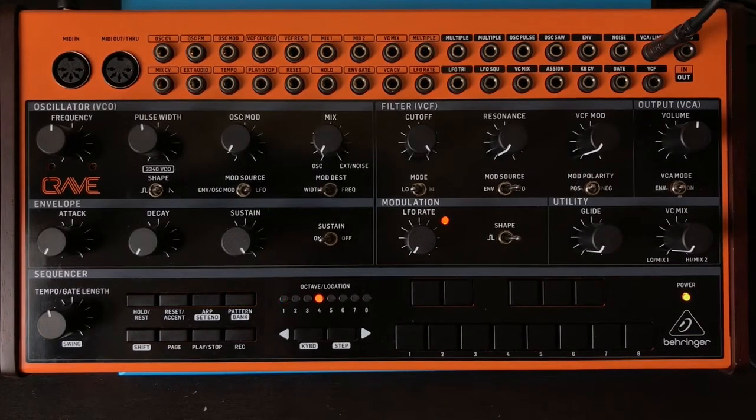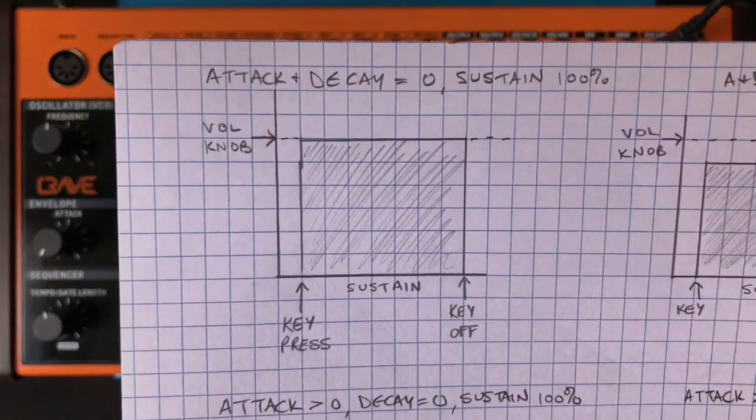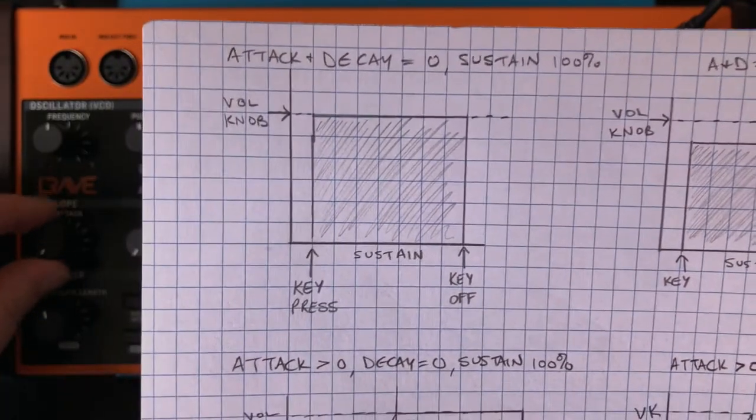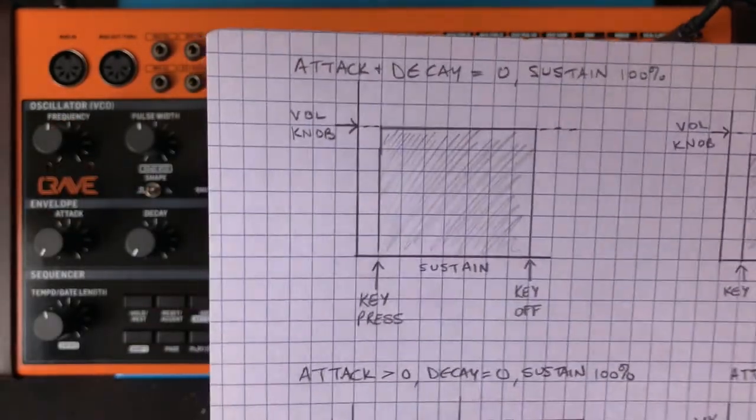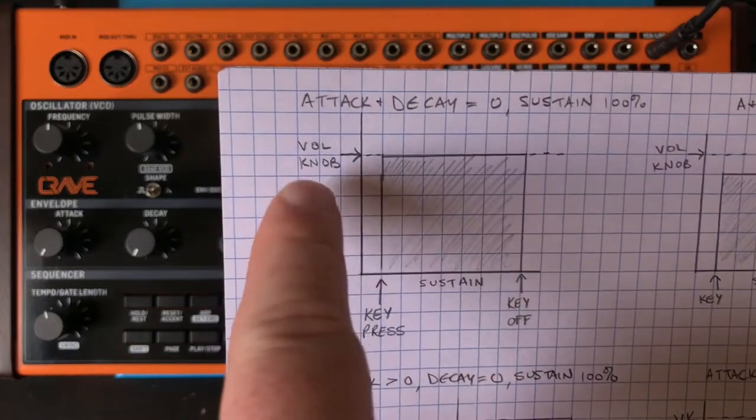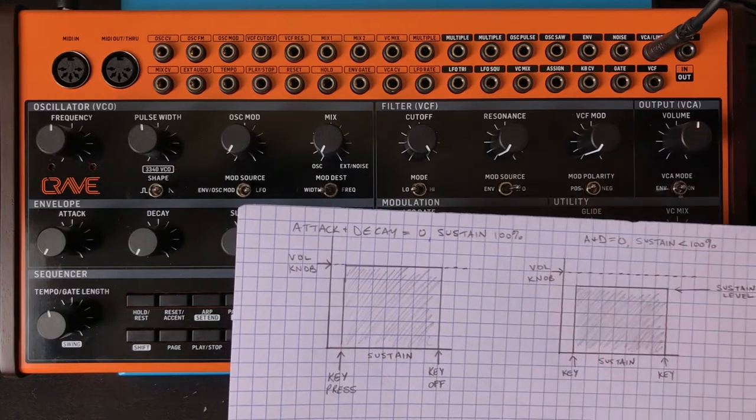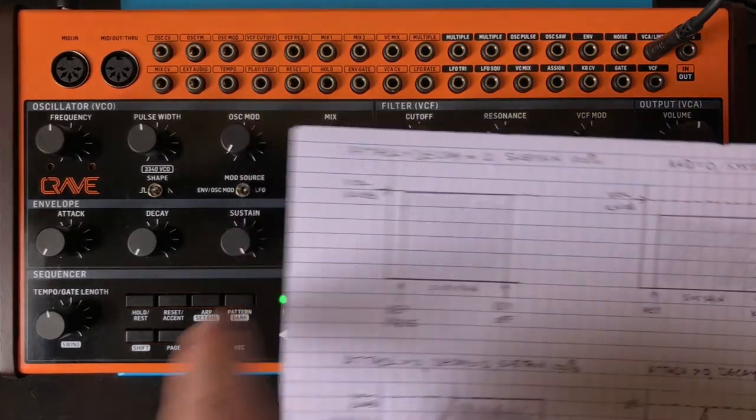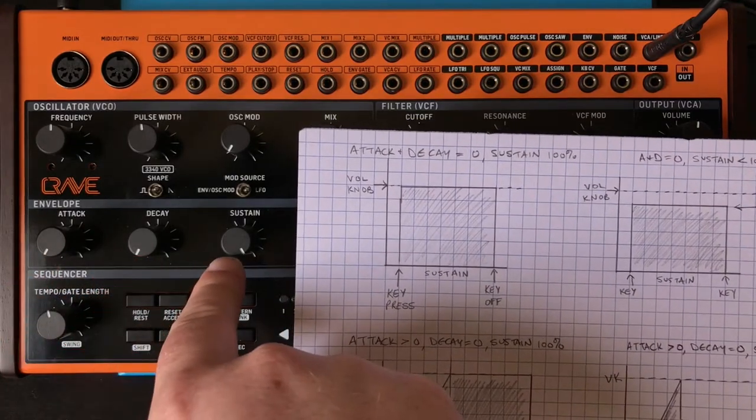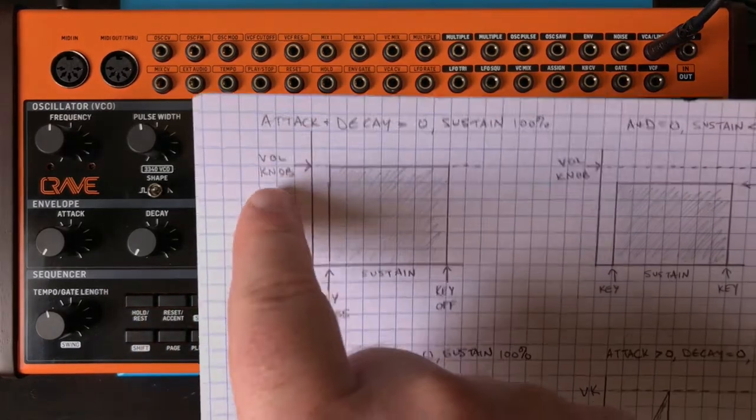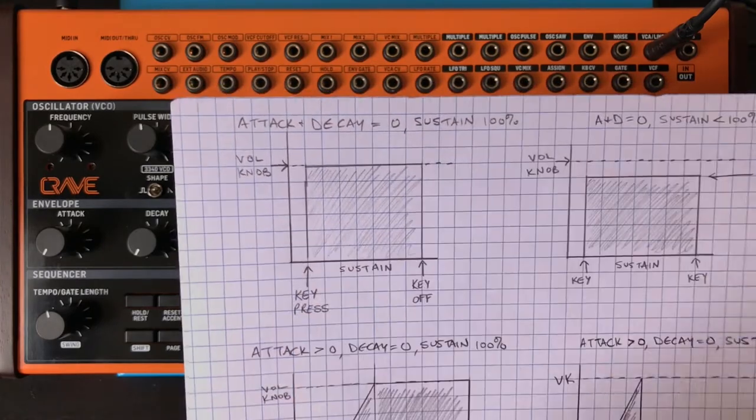Now I could just describe each of these, but I thought it would be nice to have a little drawing. So we're going to start very basic: attack at zero, decay at zero, and the sustain turned up 100%. So if you look at my drawing here, volume knob refers to this. This is the maximum volume output you're going to get. Attack is at zero all the way to the left, decay is at zero all the way to the left, sustain is all the way up at 100%. Down here, this is where I press the key, this is where I let it go. And then what I've written here, between those things, is what's happening.